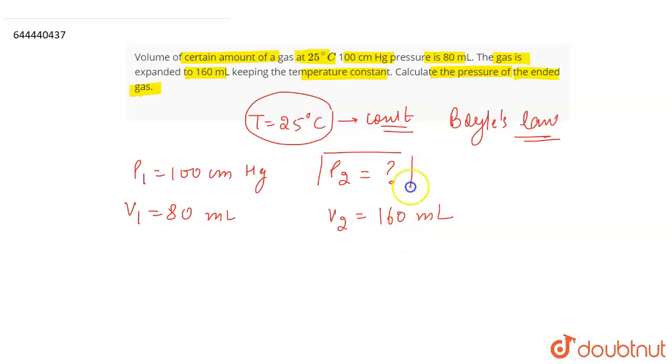So these are the things that are given in the question and you have to find out the value of this P2, the pressure of the expanded gas. Expansion means that the volume is increasing. As you can see that V1 is increasing to 160, so as the volume is increasing it means that expansion is taking place.